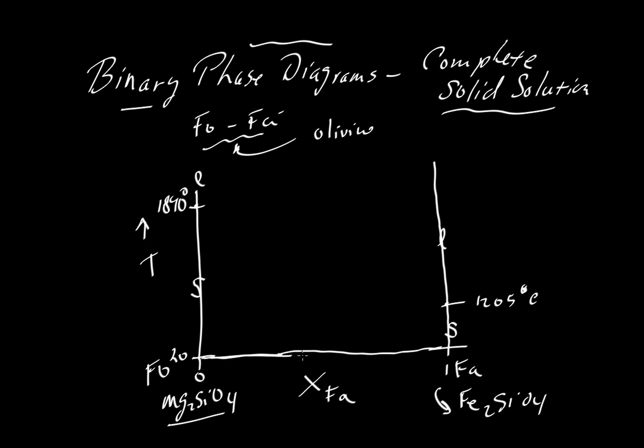That should be a nice perfectly straight line, and of course it's not. What if we have something that is a 50-50 mixture? It would fall at XFA of 0.5, and its melting behavior will be quite different than the end members.